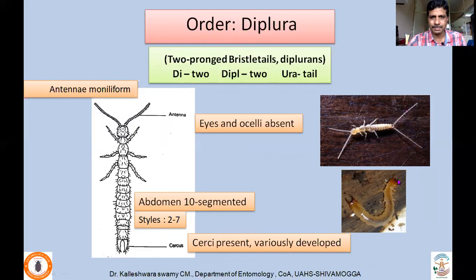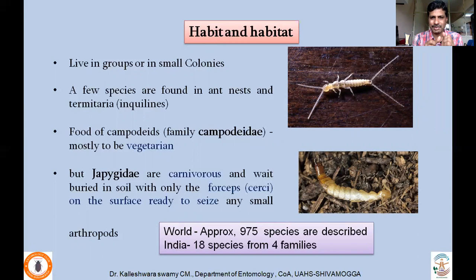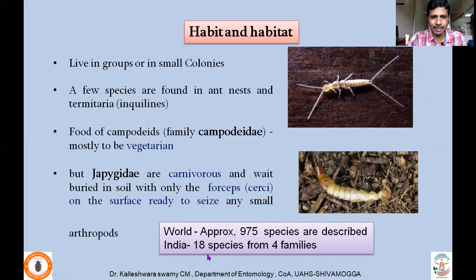Coming to habit and habitat of diplurans: they live in groups or in small colonies. A few species are found in ant nests and termite areas as inquilines. The family Campodeidae are mostly vegetarians, feeding on vegetation. The family Japygidae are carnivorous — they lie buried in soil with only the forceps-like sclerotized cerci exposed; when other arthropods move nearby, they capture them with these hard sclerotized cerci and devour them. Worldwide, 975 species have been described and from India 18 species from four families.